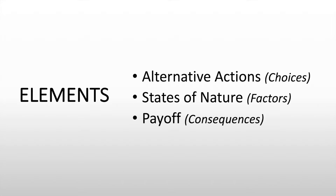So what are the elements in order for one to have a good decision or to analyze a decision? First, one should have alternative decisions, alternative actions, or choices. Then, one should have states of nature or the factors, and then payoff or consequences. We will go through each one of them later in our video.